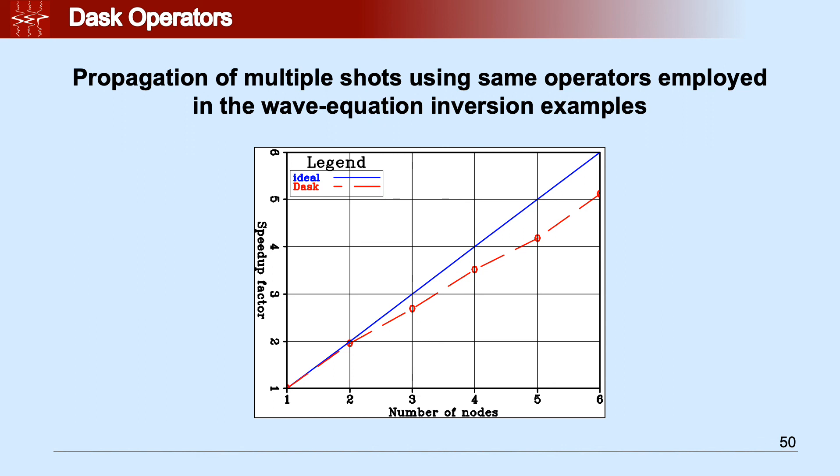Ideally, we would like to get a linear speedup, meaning a 45 degree line, shown here with the blue line. And the observed one instead is described by the dashed red curve. As you can see, it's almost linear, meaning we almost obtain a linear speedup factor in this case, which is pretty encouraging.